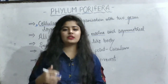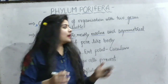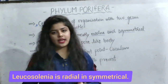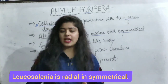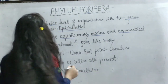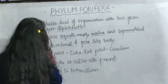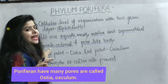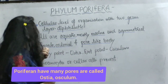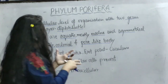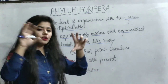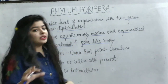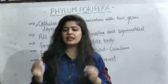Third point regarding symmetry: not all porifera have symmetry, but Leucosolenia is a porifera which shows radial symmetry. They can be solitary, colonial, and have a pore-like body. A free-living form is solitary, while colonial forms are found in groups in the ocean. The body has millions of pores present, which can be seen microscopically.